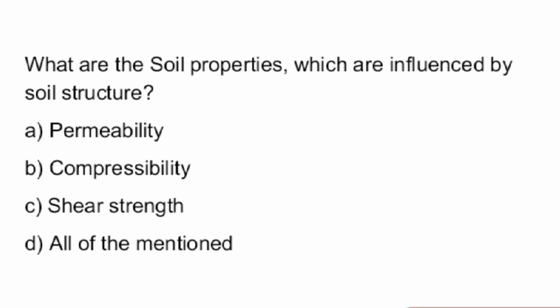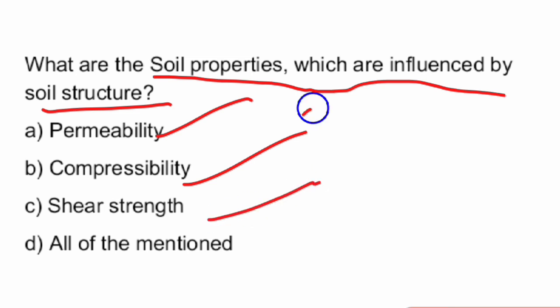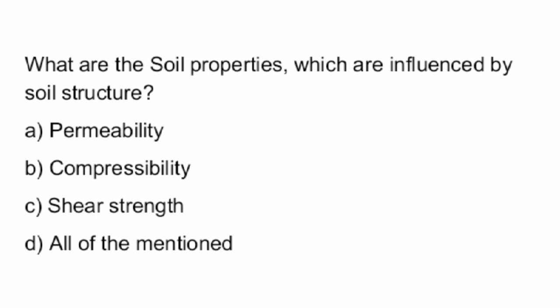First question: What are the soil properties which are influenced by soil structure? The answer is: soil properties influenced by soil structure are permeability, compressibility, and shear strength. All these are influenced by soil structure, so the answer is Option D — all of the above.